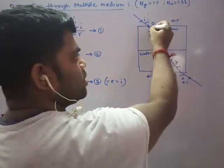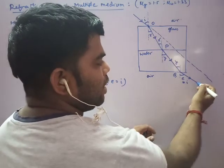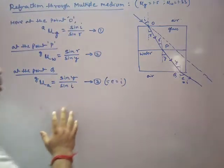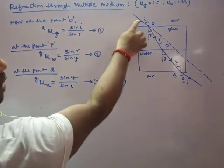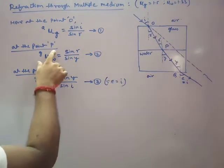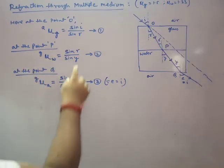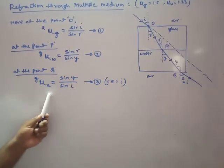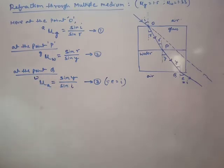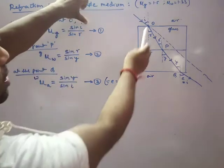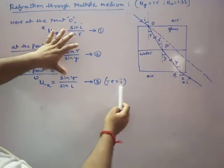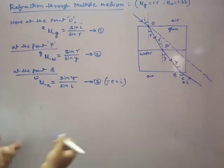One more thing: if the incident ray is parallel to the emergent ray, the angles are equal. At interface point P, the refractive index from air to glass is written; at the next interface, it is glass to water. At point Q, refractive index of water to air is applied. Writing Snell's law at each interface: sin i / sin r at each surface, giving equations 1, 2, and 3.